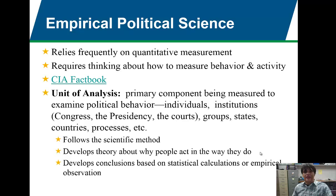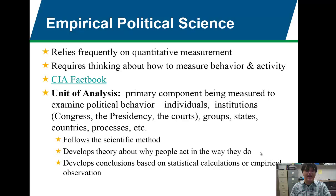Within the analysis, empirical political science always has to have a unit of analysis — they have to identify what they're measuring before running the statistical analysis. Some units of analysis that could be used include individuals, institutions such as Congress, the presidency, the courts, groups, states, countries, processes, etc. Pretty much anything can be a unit of analysis. We just have to identify that that's what we want to measure and observe.